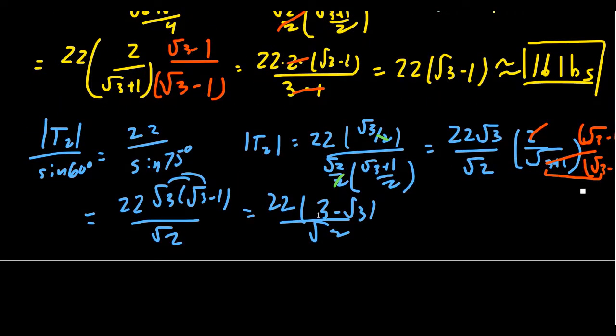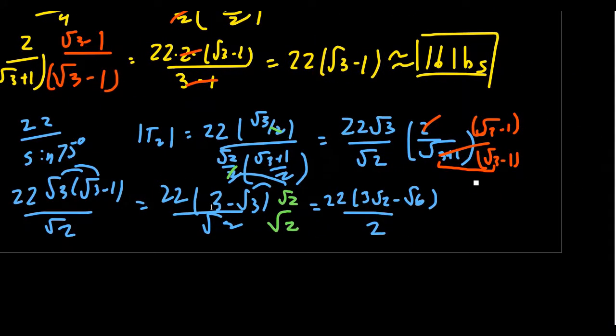And then the last thing I want to do, again, trying to continue with this rationalizing here. I'm going to times the bottom by square root of 2, the top by the square root of 2. Distributing the square root of 2 on the top here, you're going to get 22 times 3 root of 2 minus the square root of 6. In the bottom, you get a 2 now. 2 does go into 22 eleven times. So we end up with, as the exact value, 11 times 3 times the square root of 2 minus the square root of 6, for which an approximation seems very appropriate. This is approximately 20 pounds of tension.